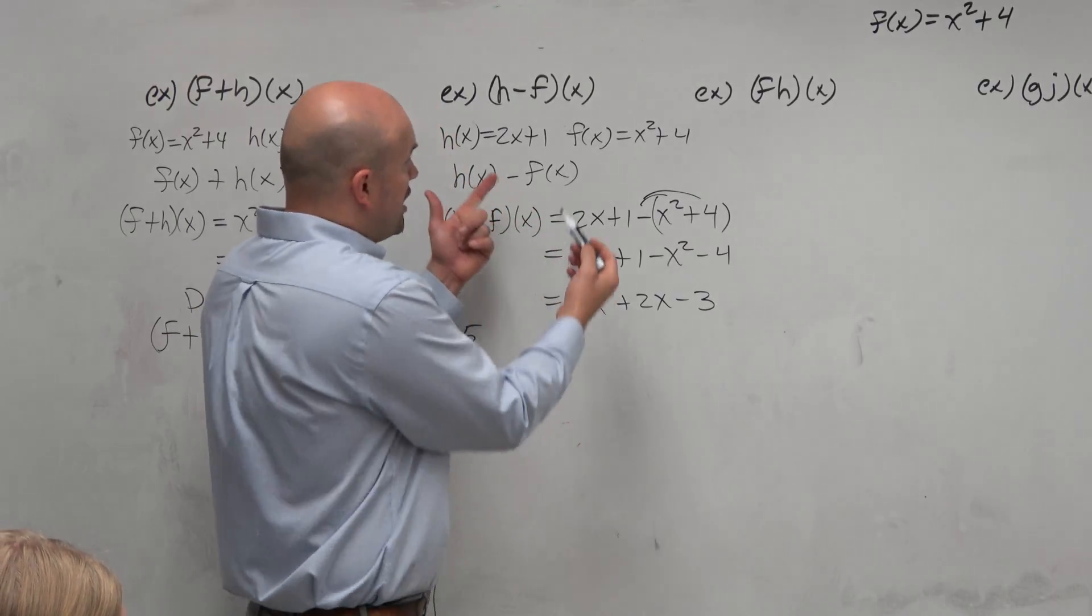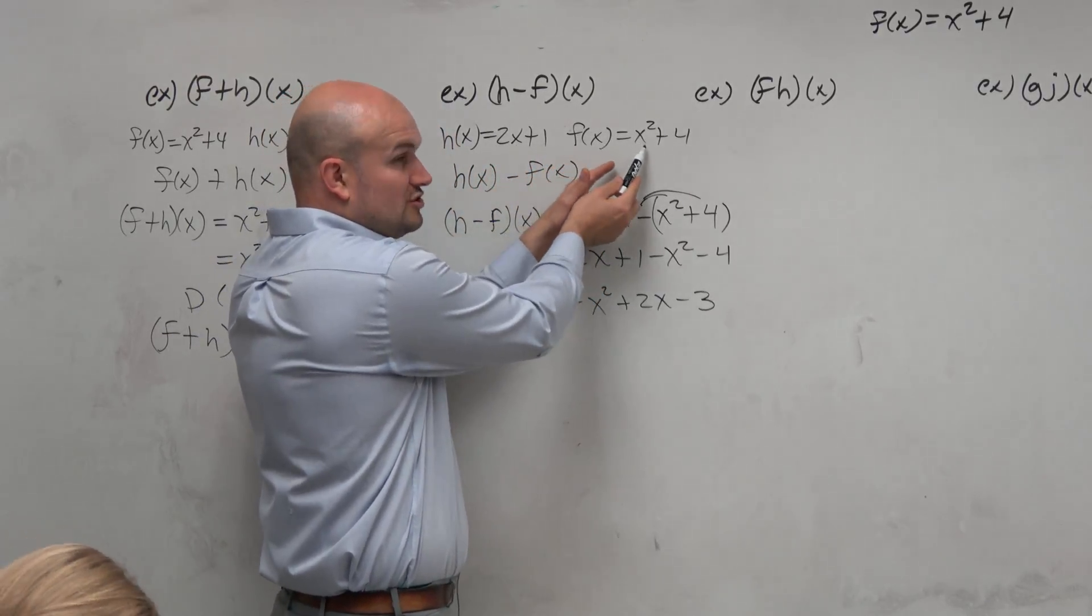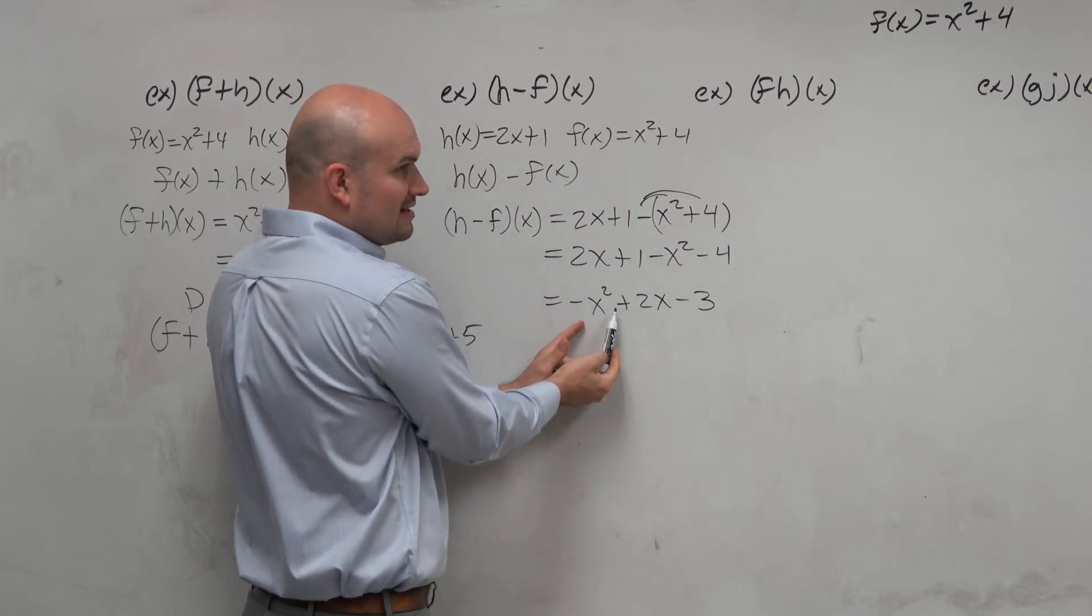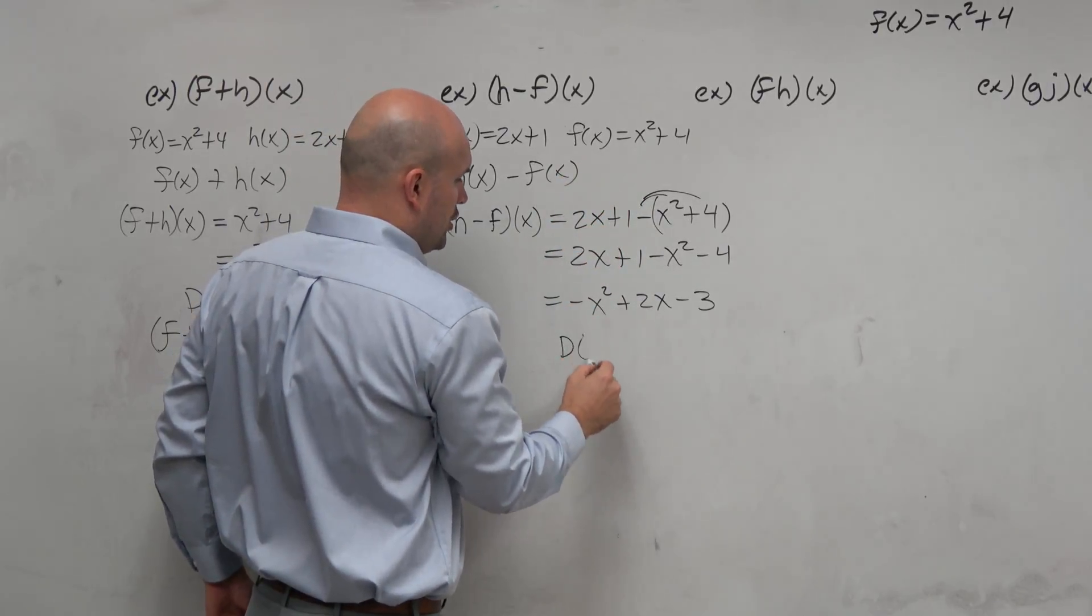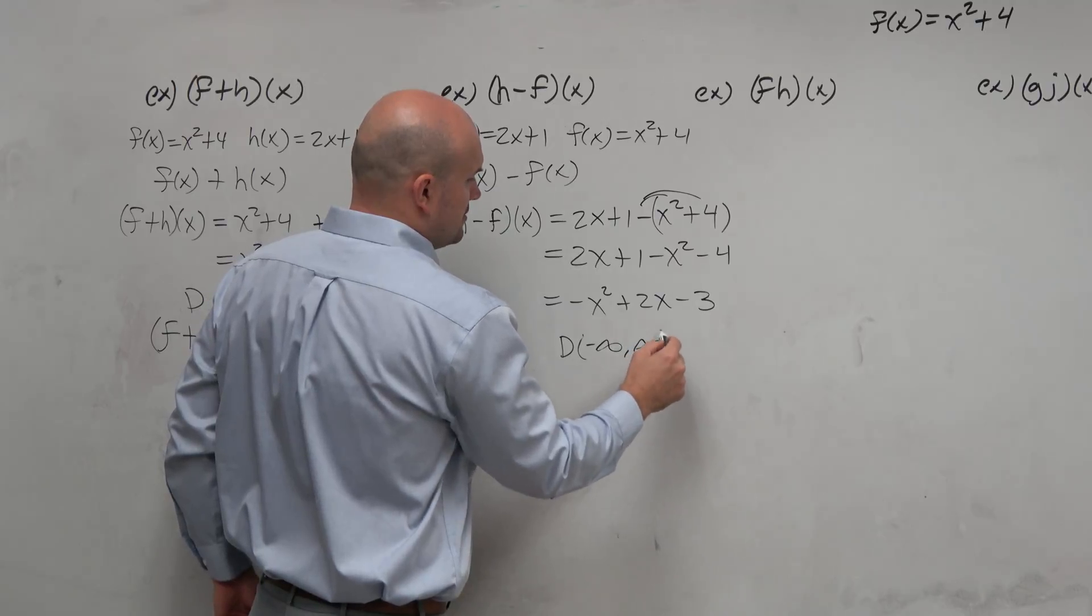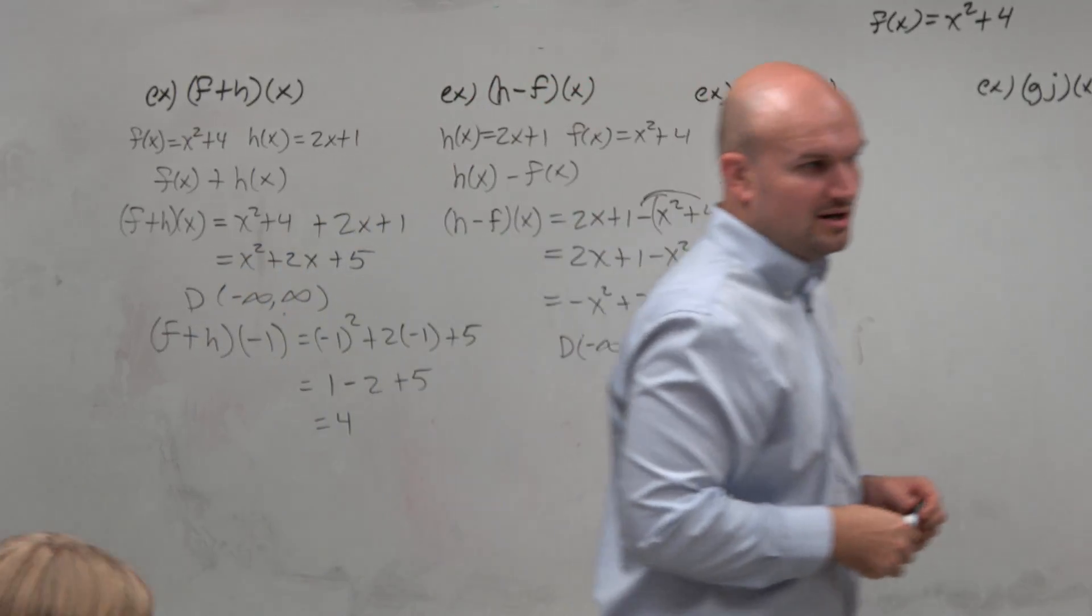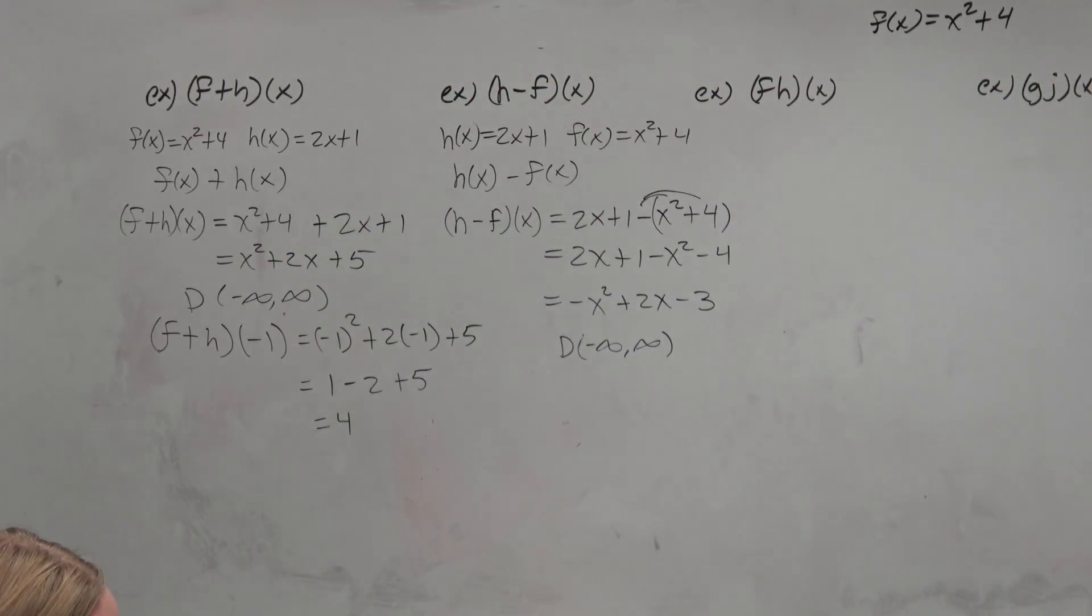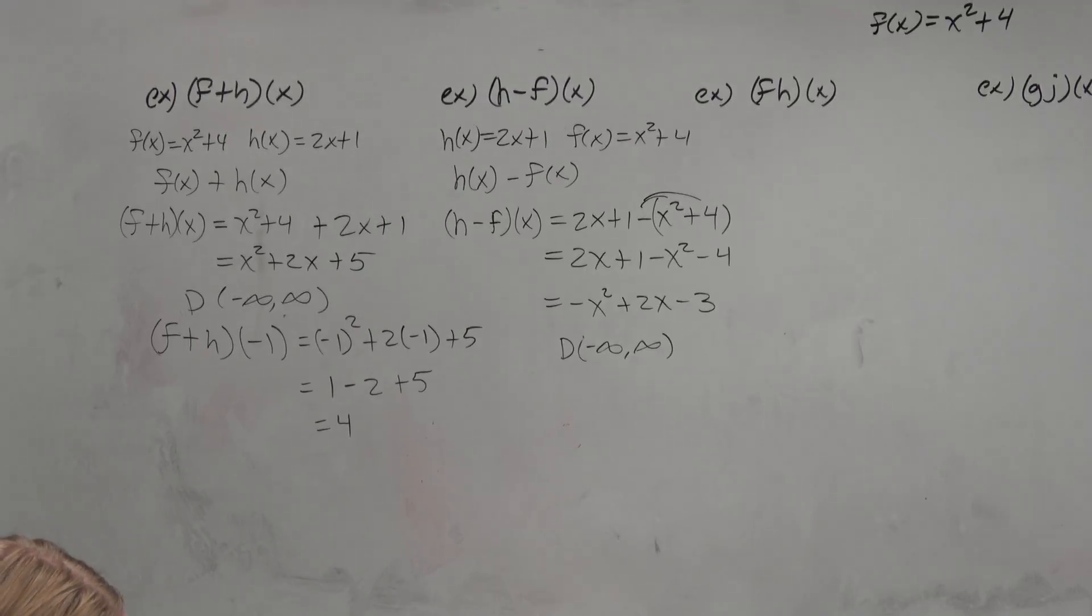And again, guys, our domain here, all real numbers. Domain, all real numbers. Subtract them and then you have another quadratic, which is, again, just going to be all real numbers. And that's because we know our parent function so well and we know what the domains are of those functions.